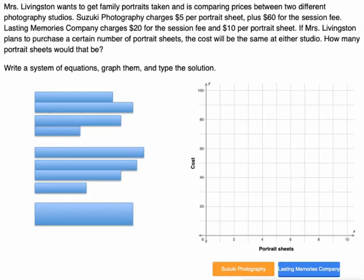Mrs. Livingston wants to get family portraits taken. She's comparing prices from two different photography studios. You got Suzuki Photography, and they charge $5 per portrait sheet plus $60 for the session fee. But Lasting Memories Company charges $20 for the session fee and $10 per portrait. So you can see one charges more for the session fee, but they charge less for portrait sheets. So if Mrs. Livingston plans to purchase a certain number of portrait sheets, the cost will be the same at either studio. How many portrait sheets would that be? So like how many portrait sheets would be the break-even point?